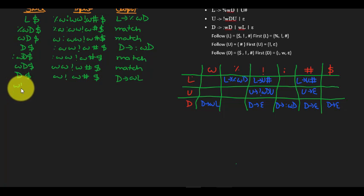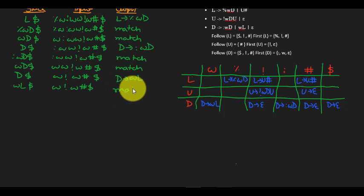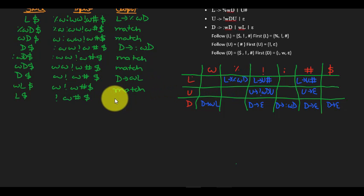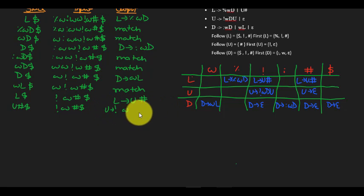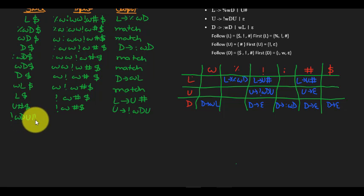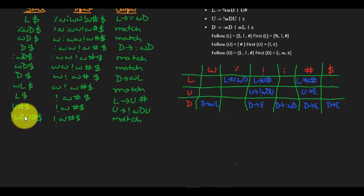We pop off D and push WL inside the stack. W and W is a match again, so we pop it off and we are left with L dollar and the remaining input. L on exclamation mark — L goes to U hash. Now we push U hash inside the stack after popping L off. We pop off U and push exclamation WD — hash is already there. This is a match, so we pop it off and discard from the string.